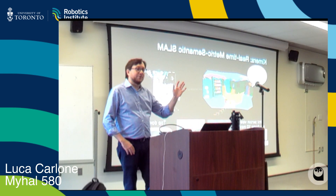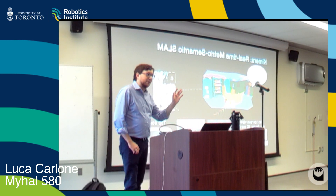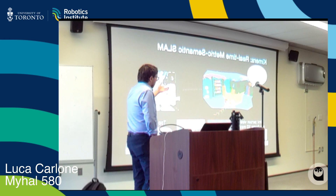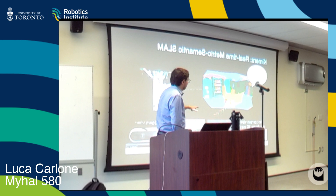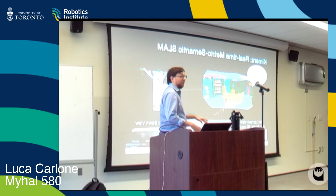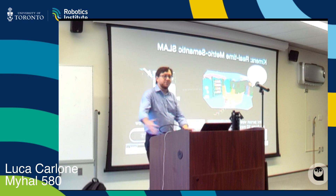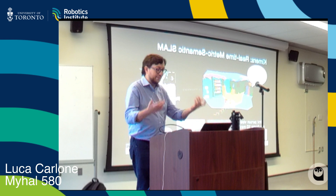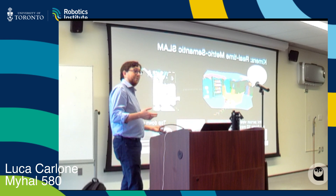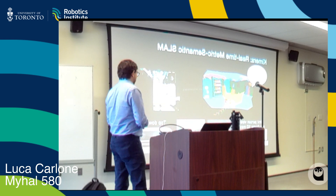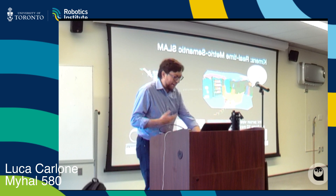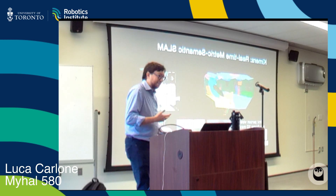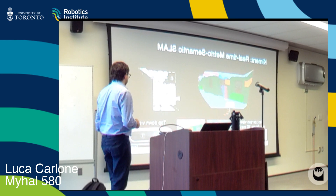I want to spend a couple of slides convincing you why we need metric-semantic and hierarchical representations. If I want to tell a robot to grab a cup of coffee from a desk, the robot will need to know how to avoid obstacles as it moves, but also what a desk is and what a cup of coffee is — so it needs some semantic understanding of the scene.